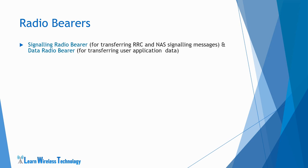For transferring user application data, the UE requires to establish a data radio bearer. During the initial attach process, when EPS bearer establishment takes place and also during modification and release of the EPS bearer, the NAS signaling messages are encapsulated within the RRC message for uplink and downlink transmission. These messages are interpreted only by the NAS layer of UE and MME. However, the access stratum layer provides reliable and in-sequence delivery of NAS messages over the air interface.